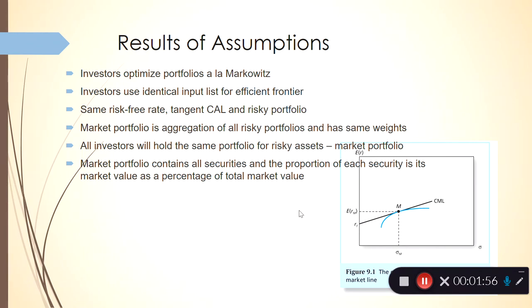All investors then end up with the identical input list for the efficient frontier. Since they all have the same risk-free rate and tangent capital allocation line, they all have the same optimal risky portfolio. The market portfolio is an aggregate of all the risky assets with all the same weights, and all investors will hold that same market portfolio. Where they fall along the capital allocation line really just depends on their degree of risk aversion.